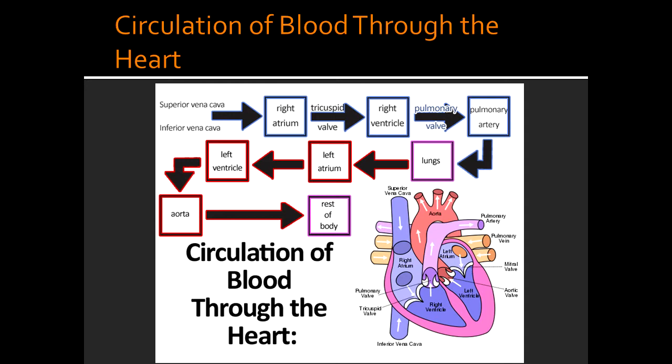The blue boxes represent deoxygenated blood. When the blood is in this area, it's deoxygenated, meaning it's coming back from the rest of the body after being used. The blood that was oxygenated reaches the entire body, oxygenates it, and then comes back to the heart as deoxygenated blood. That's why it's blue.